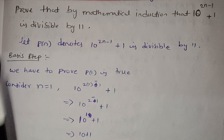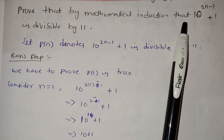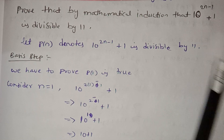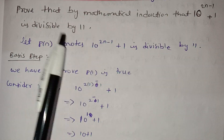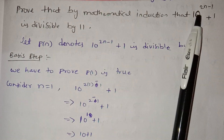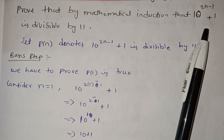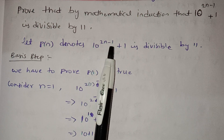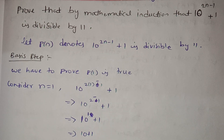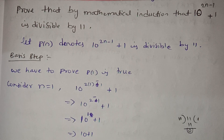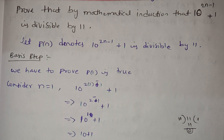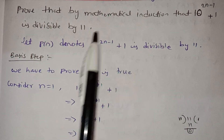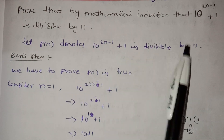Let's see. Prove by mathematical induction that 10 power 2n minus 1 plus 1. This is the question — this is the statement: is it divisible by 11? This is not divisible by 11 at first glance. Let P(n) denote 10 power 2n minus 1 plus 1. We will now state this in mathematical induction.